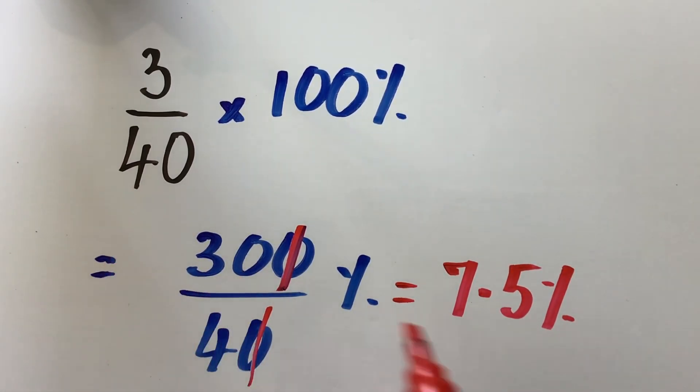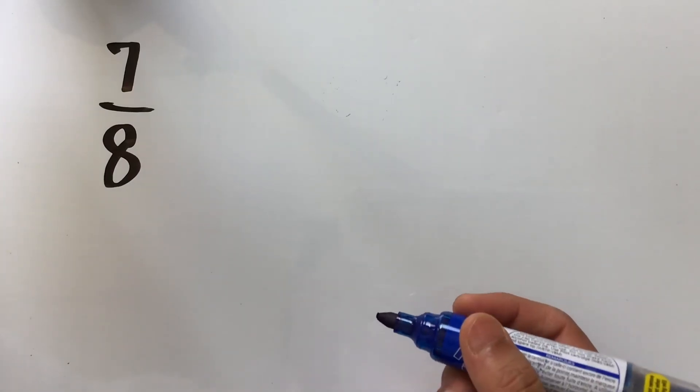So, 3 over 40 as a fraction is same as 7.5 percent. In this example, we have 7 over 8.